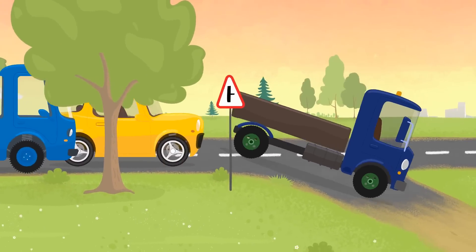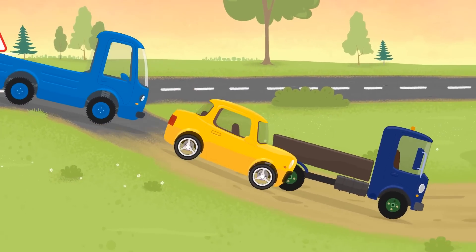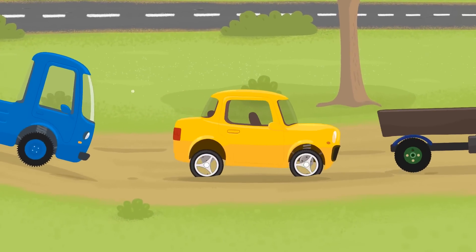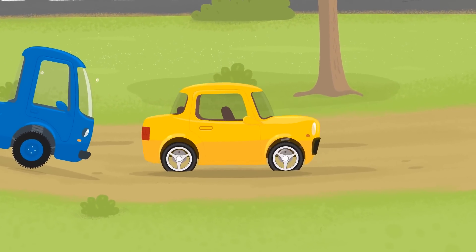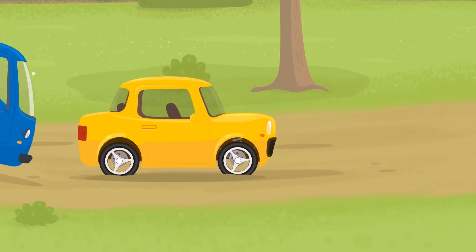And here is the right turn. Cars drive on the dirt road now. There are puddles and holes, so be careful cars. Oh, it looks like the little yellow car can't go down a road like this.